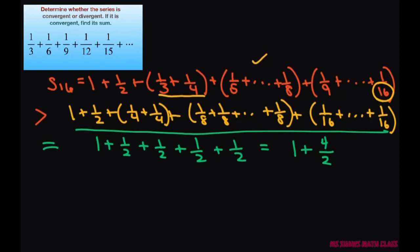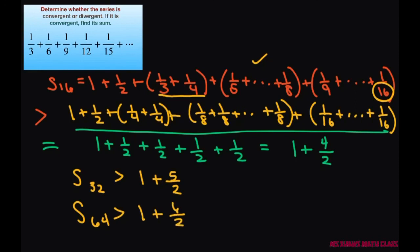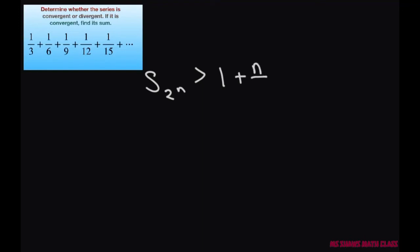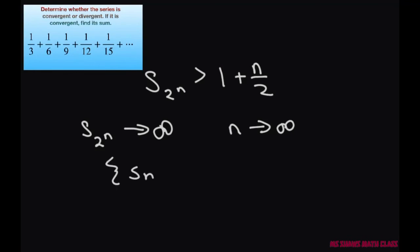So if we did S₃₂, this one is going to be greater than 1 + 5/2. S₆₄ is going to be greater than 1 + 6/2, and so forth. That means our S subscript 2 to the power of n is greater than 1 + n/2. That shows that as n gets larger and larger, our partial sums grow without bound. So our harmonic series is divergent.